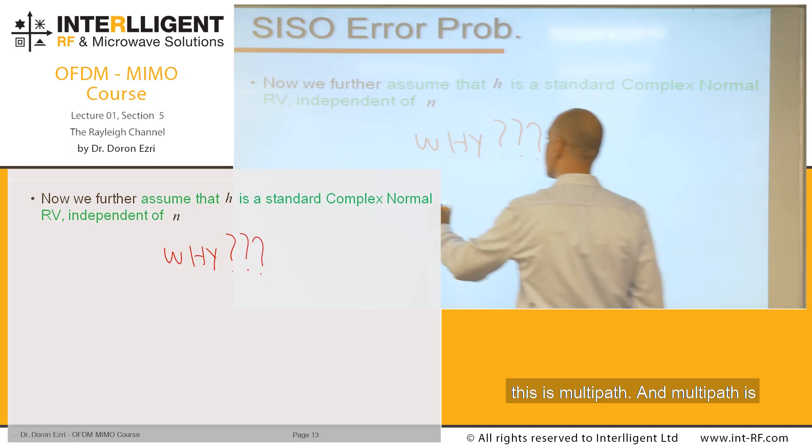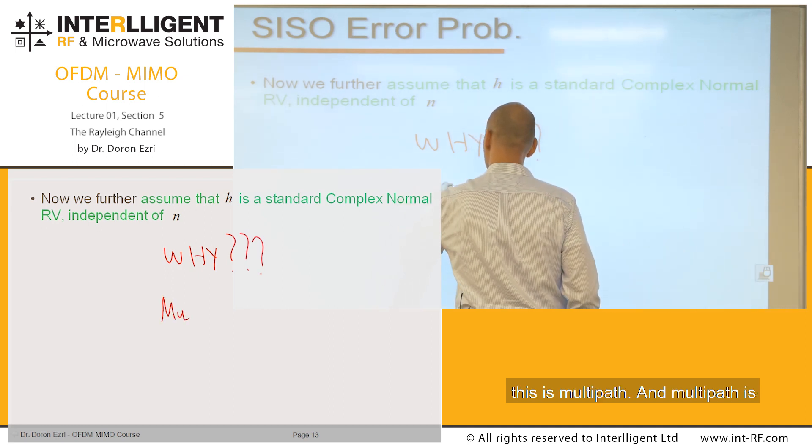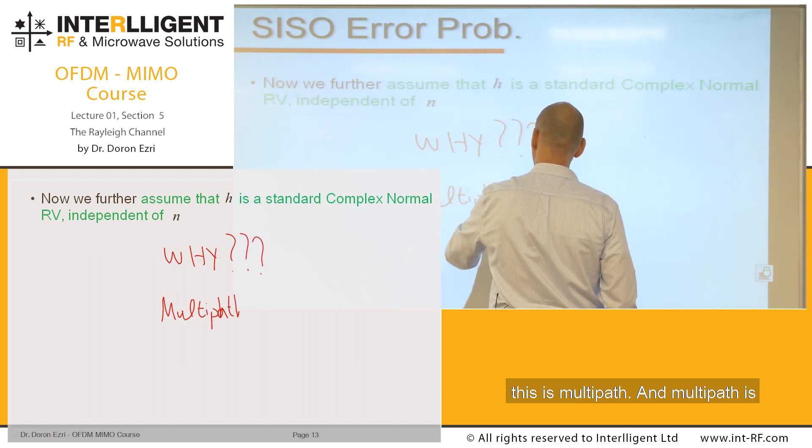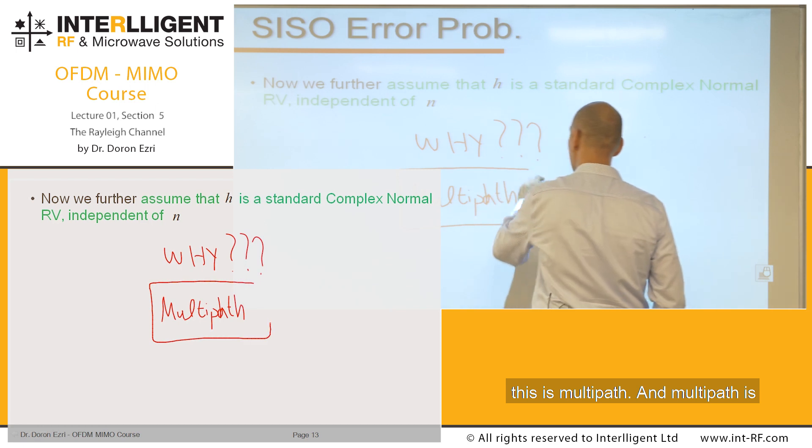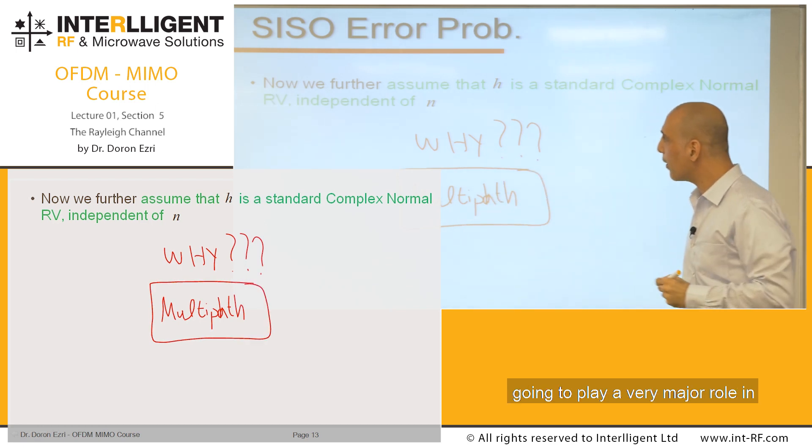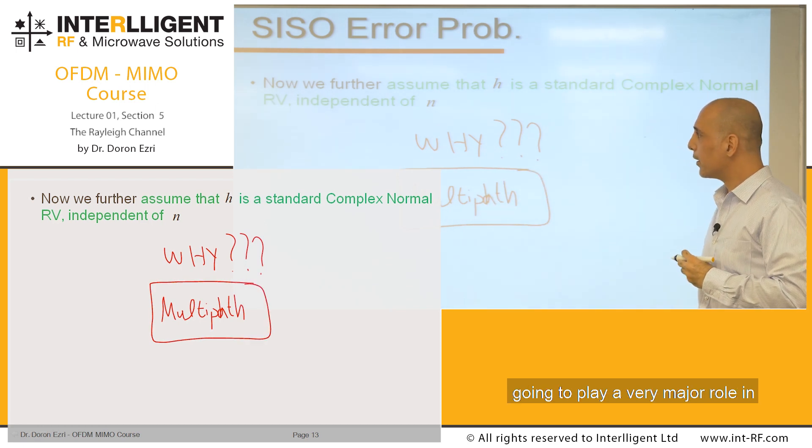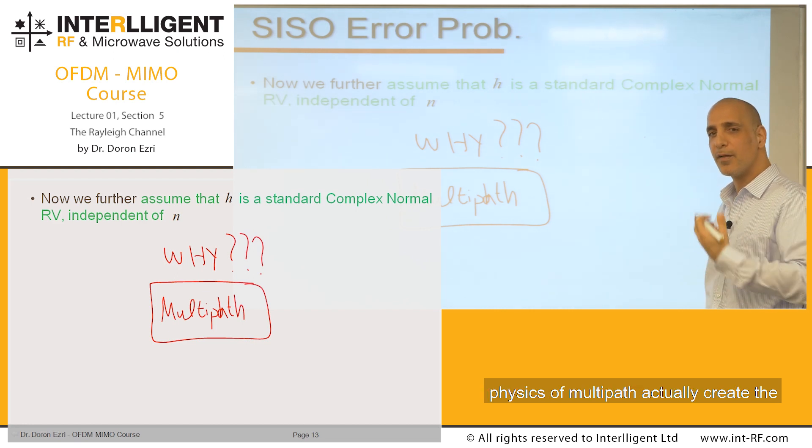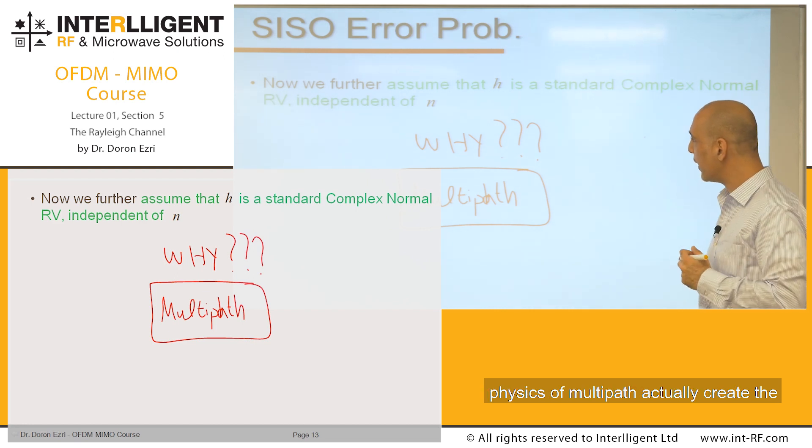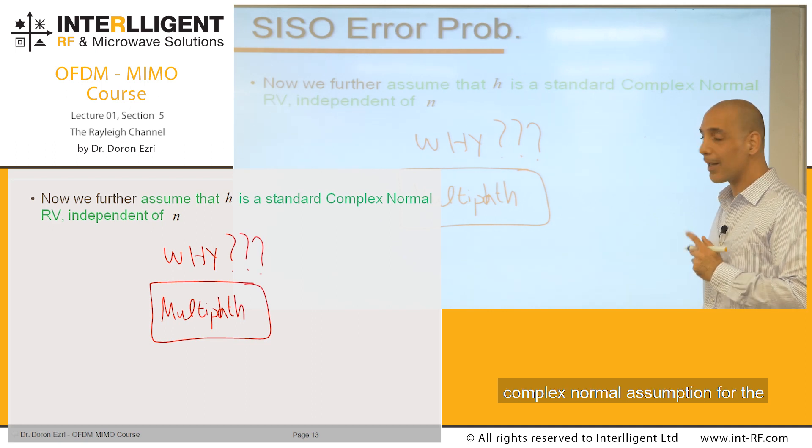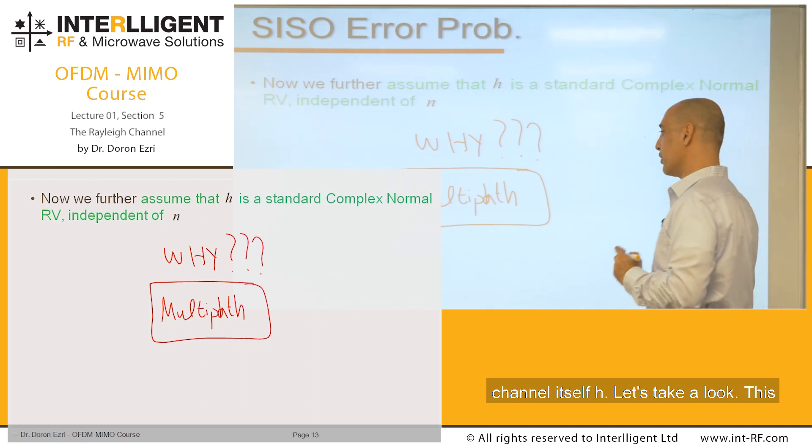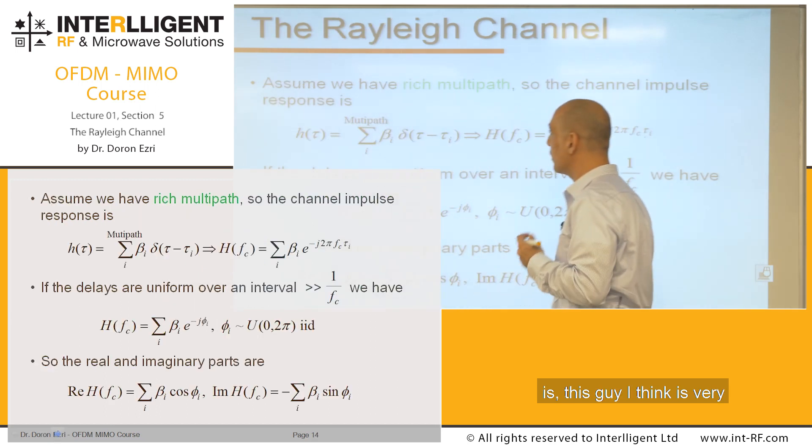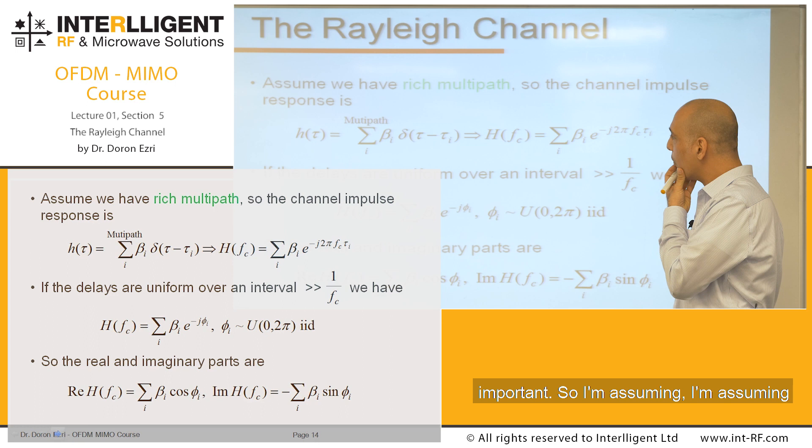And the answer for this is multipath. Multipath is going to play a very major role in our course. So let's understand why the physics of multipath actually create the complex normal assumption for the channel itself, H. This is very important.